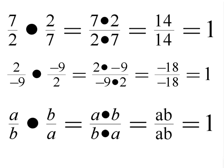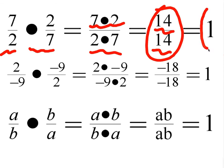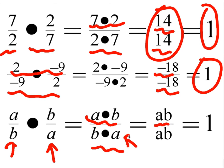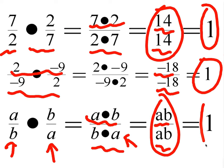We can also look at a mathematical proof using numbers. If I take 7 halves and multiply by the flipped version, 2 sevenths, we'd have 7 times 2 on top and 2 times 7 on the bottom. 7 times 2 is 14, and 2 times 7 is 14. Any number divided by itself is 1. This also works for negative numbers: 2 times negative 9 over negative 9 times 2 gives us negative 18 over negative 18, which gives us 1 back. In general, if I have a over b and multiply by the flipped version b over a, I'd have a times b on top and b times a on the bottom. Since order doesn't matter in multiplication, both are ab, so the answer is 1.